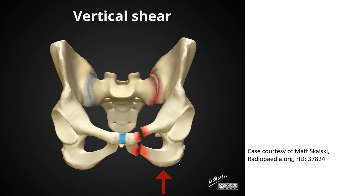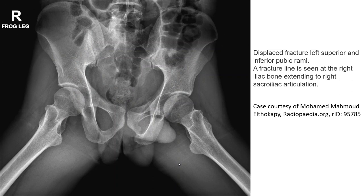Here it is. The images show the vertical shear pelvic fracture, also called the bucket handle fracture. This is the pelvic X-ray showing displaced fracture of the left superior and inferior pubic rami. The fracture line is seen at the right area, starting to involve the sacroiliac joint articulation. This is the bucket handle pelvic fracture.